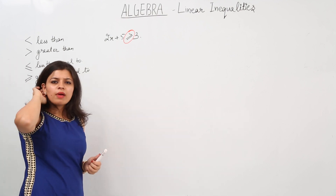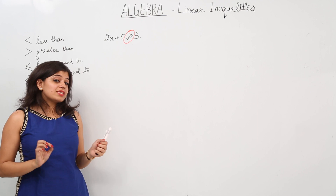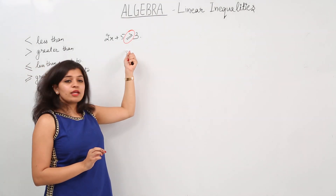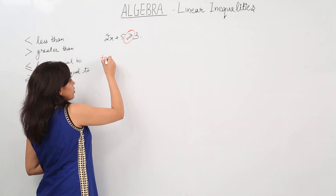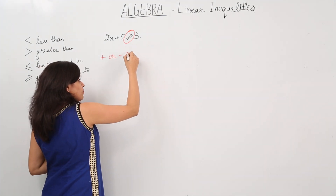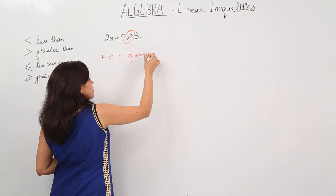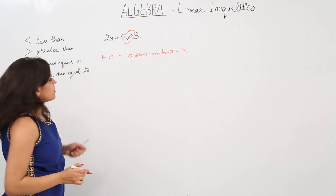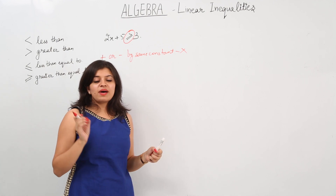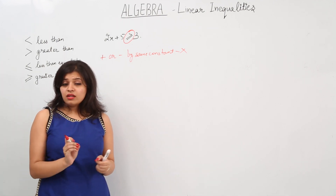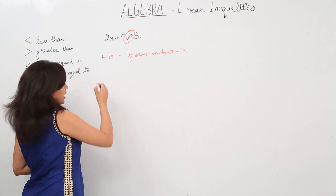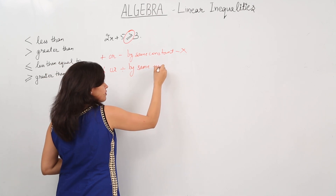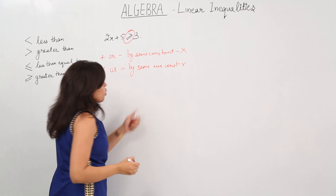There are a couple of rules to remember. If we add or subtract both sides — LHS and RHS — by the same number, the sign of the inequality does not change. Similarly, if we multiply or divide LHS and RHS by the same positive constant, the inequality does not change or reverse.